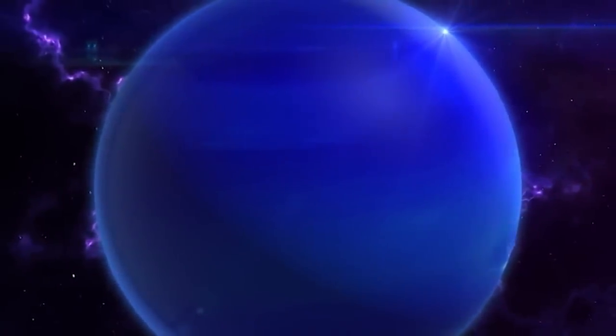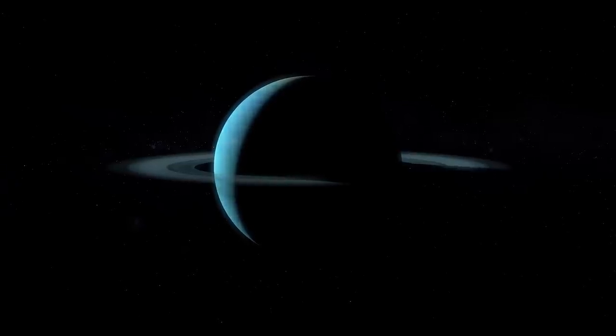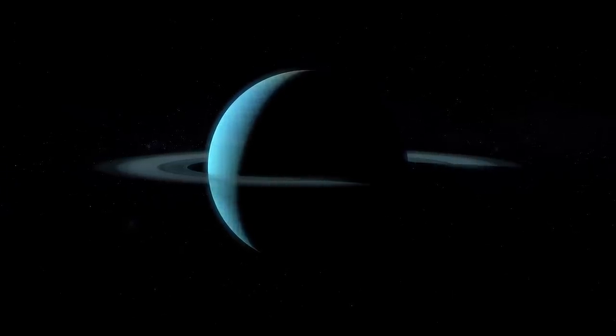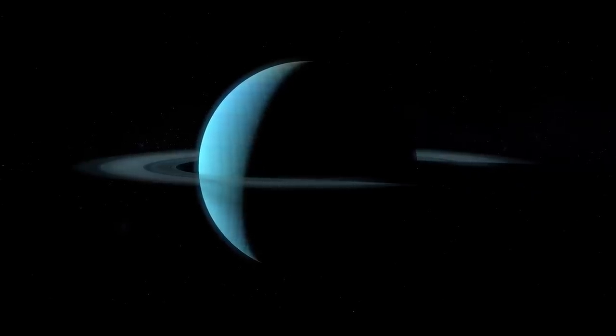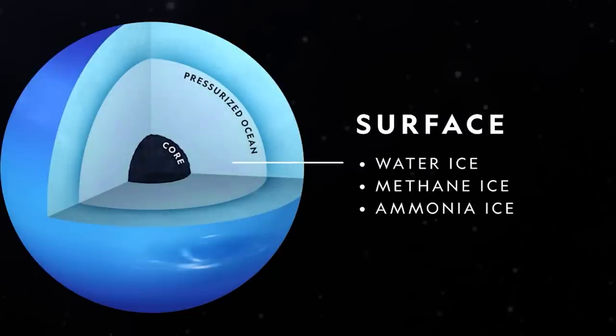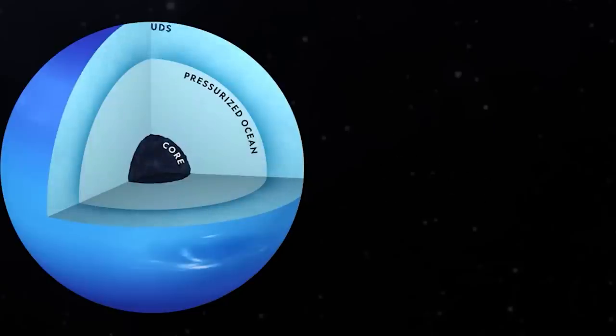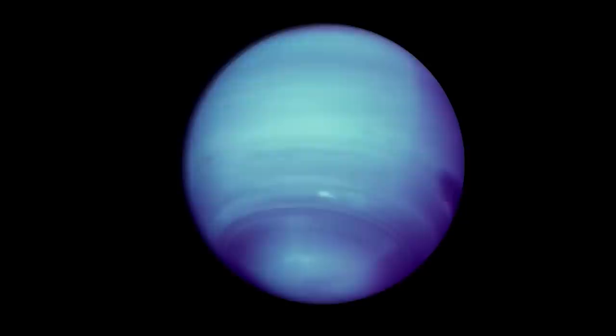Neptune, the second icy giant planet, was discovered thanks to mathematical calculations. The mathematician Jean-Joseph Urbain Laverriere deduced its existence while trying to understand the anomalies of motion observed on Uranus. The composition of Neptune is close to that of Uranus. It owes its blue color to the absorption of red light by the methane in its atmosphere.